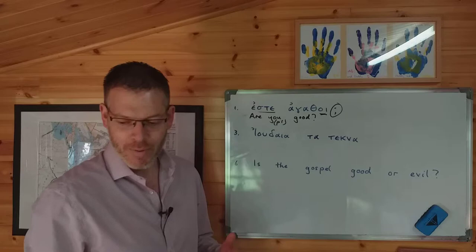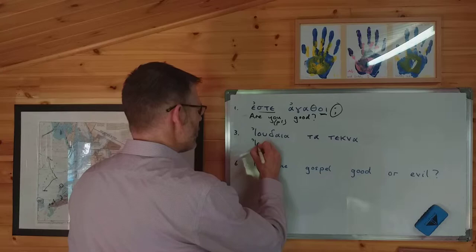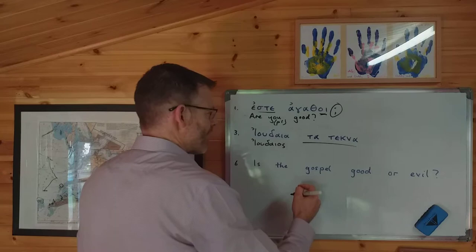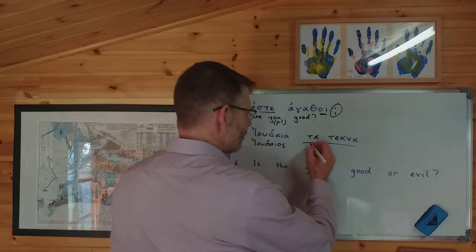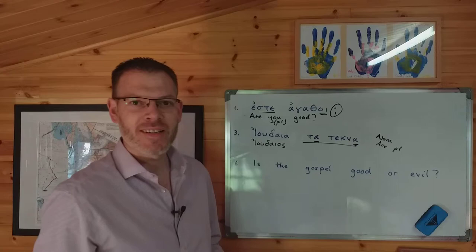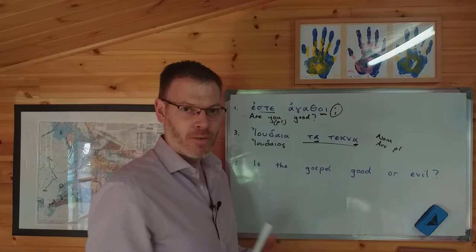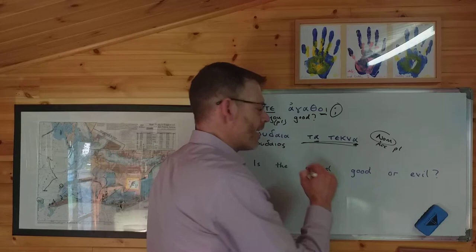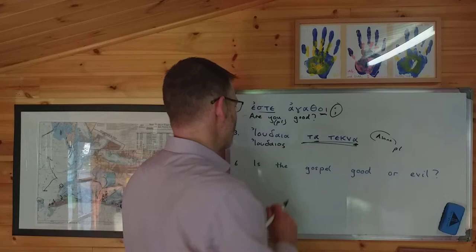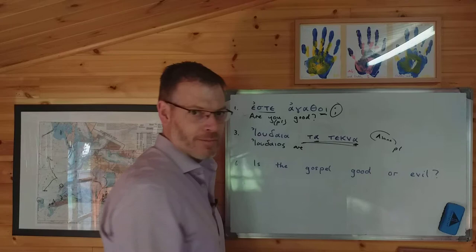Eudaia comes from the word eudaios, meaning either 'Jewish' or 'a Jew'. And tatekna comes from tateknon, meaning 'the children'. So tatekna is either nominative or accusative plural. But because the verb is 'to be', both the subject and the complement will be in the nominative — so it would not be correct to say it could be in the accusative in this context. Therefore it means 'the children are Jewish' or perhaps 'the children are Jews'.